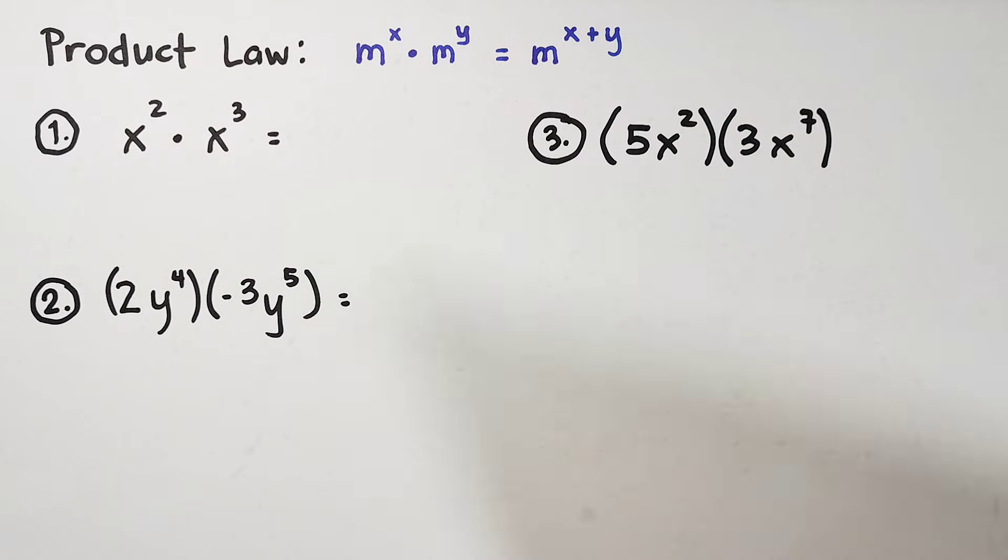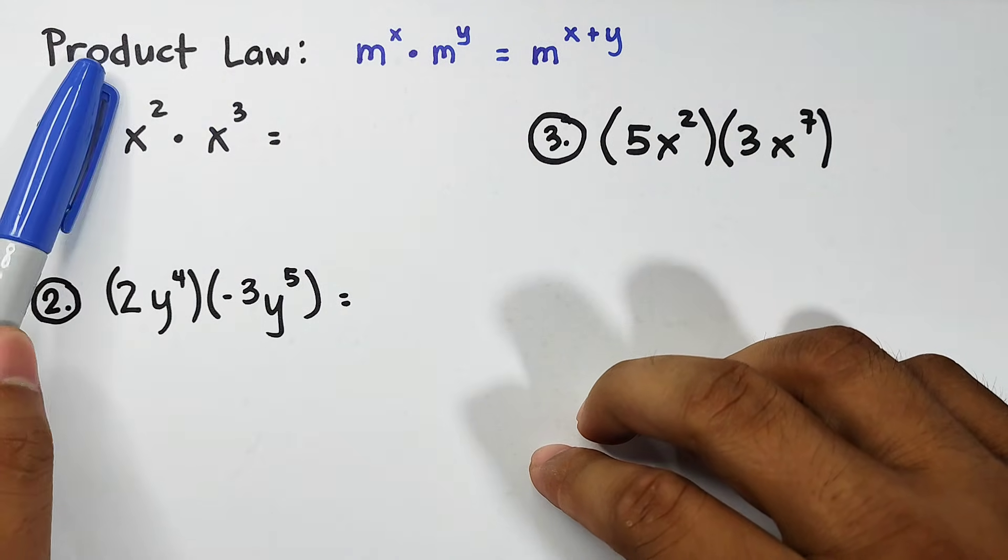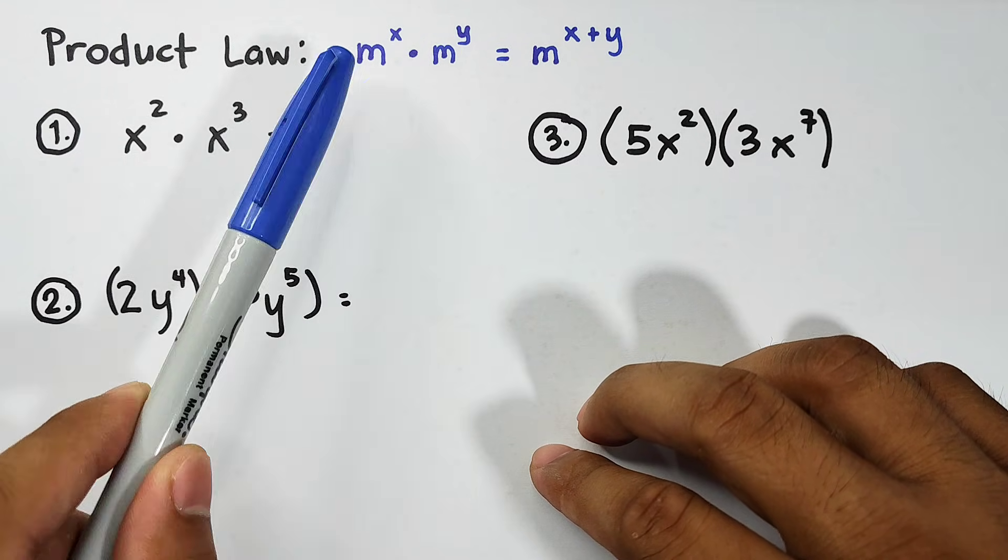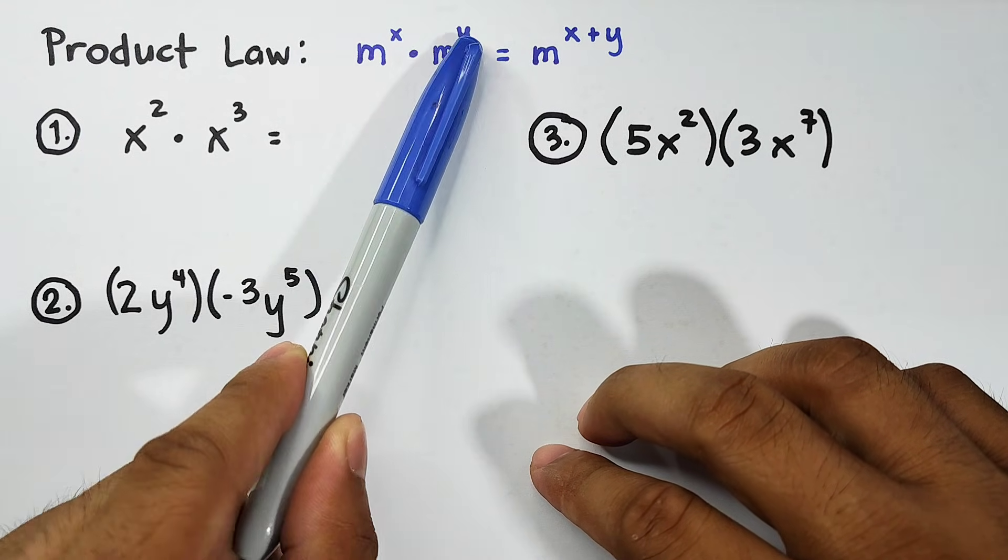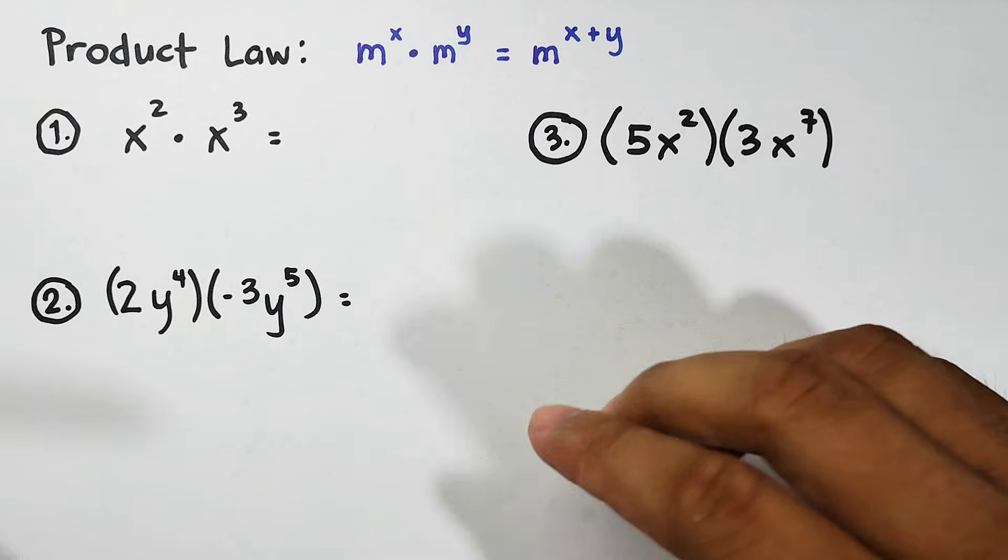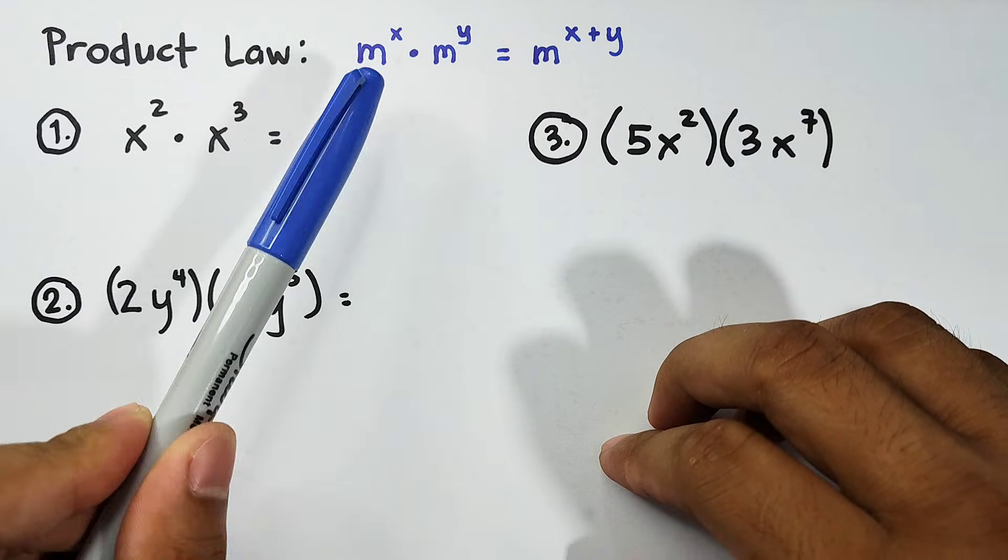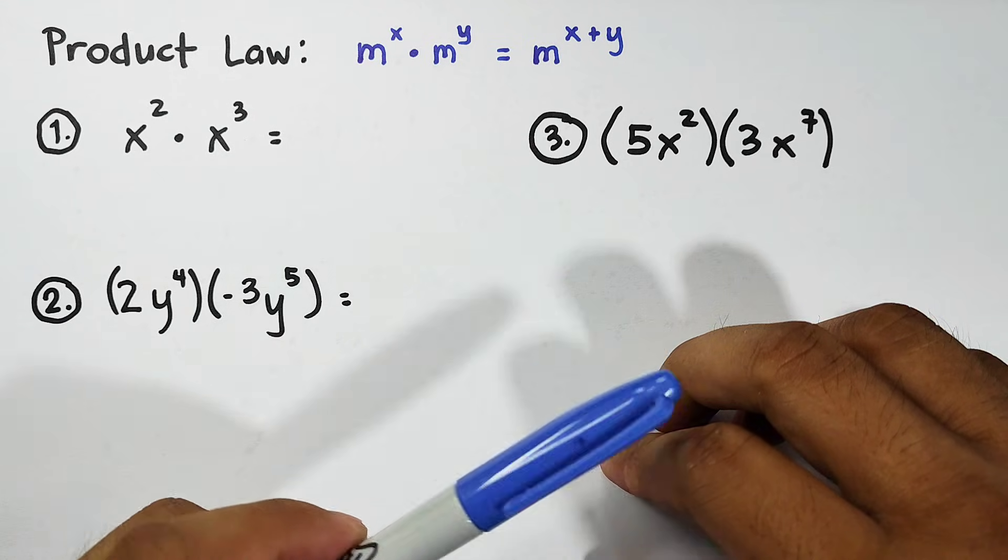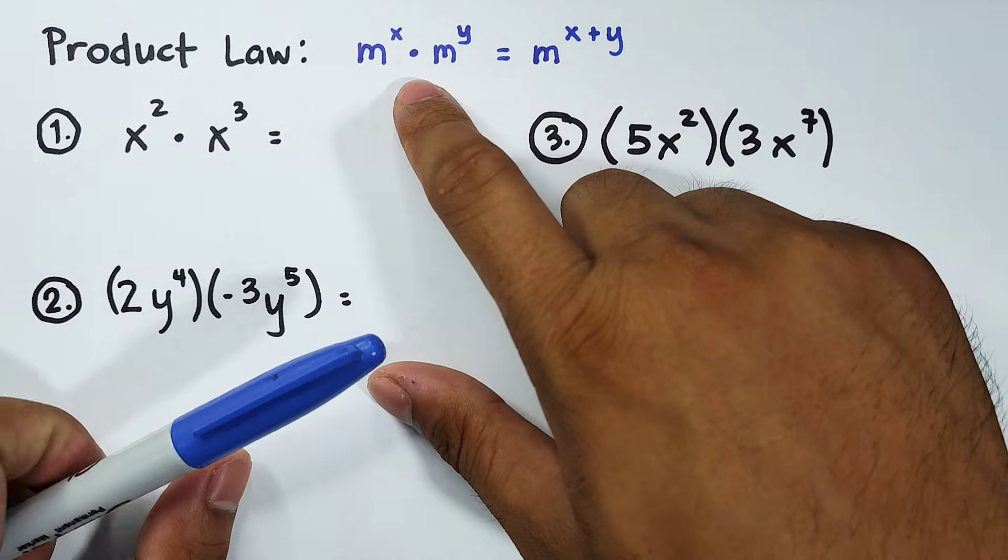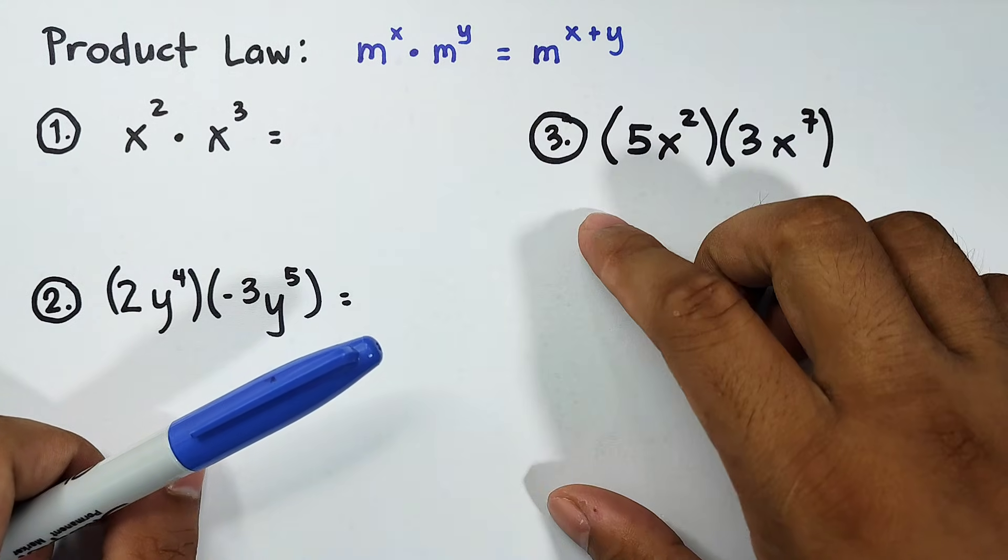The first law that we're going to talk about here in our video is all about the product law. For the product law, here's our representation for that law. We have m raised to x times m raised to y is equal to m raised to x plus y. Here, the base is the variable m. It represents the base while your x and y represents the exponents of the bases. Now, in applying the product law, what you need to do, if they have the same base, you only need to copy the base that is the same and then simply add exponents.